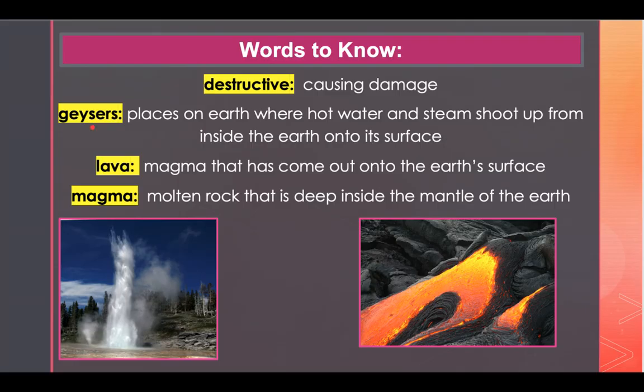Our next word is 'geysers.' Geysers are places on earth where hot water and steam shoot up from the inside of the earth onto its surface. An example of this: many people travel to see the geysers in Yellowstone National Park.